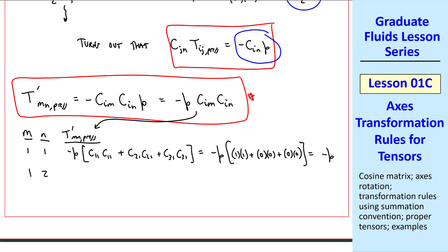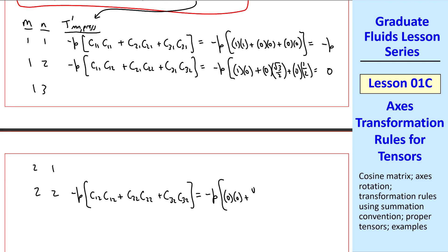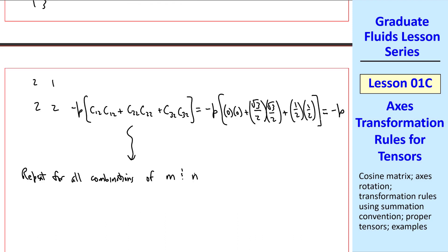Similarly, for m equal 1 and n equal 2, we get negative p times the sum of these three terms. And when we plug in our values, we get 0. We can continue for all the possible combinations of m and n. There are 9 of them. I'll do one more here, namely 2, 2. I get these three terms. And when I plug in the components of the cosine matrix, it turns out that these two terms add up to 1, so we get negative p. We repeat for all combinations of m and n. And again, you are welcome to try this on your own.